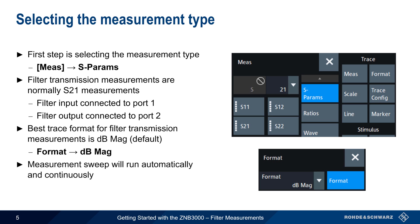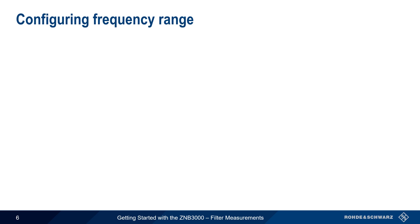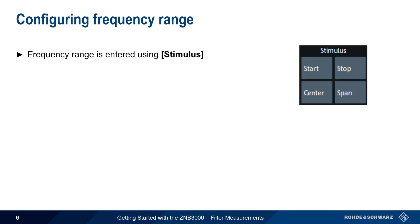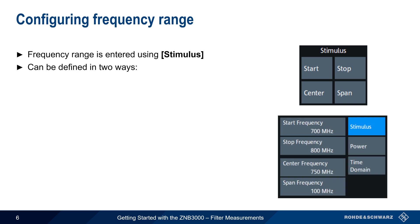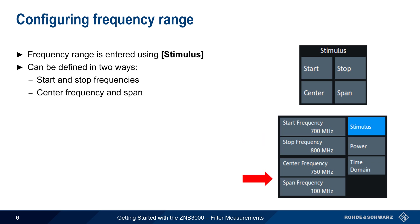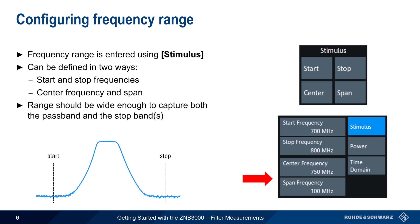Note that by default, the measurement sweep will run automatically and continuously. Next, we need to configure the frequency range, which is entered from the Stimulus menu. There are two ways frequency range can be entered: either as start and stop frequencies, or as a center frequency and span. For example, a center of 750 MHz and a span of 100 MHz is the same as a start frequency of 700 MHz and a stop frequency of 800 MHz. Regardless of how the limits are entered, the range should normally be chosen to capture both the filter passband as well as at least some portion of the stopband or bands.